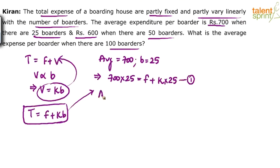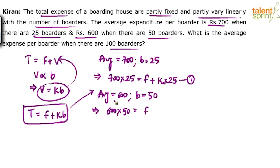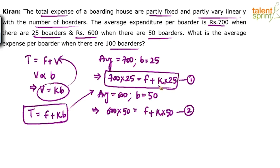Similarly, the average is 600 when there are 50 borders. So 600 × 50, which is 30,000, equals f plus 50k. f is fixed — it does not change. From the given data we have framed two equations: 700 × 25 = f + 25k, and 600 × 50 = f + 50k. Two equations and two unknowns: f and k.